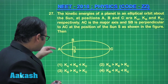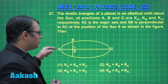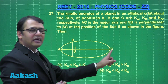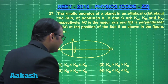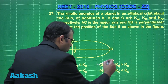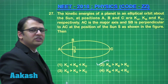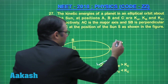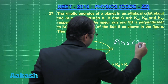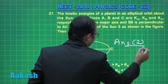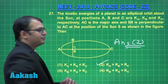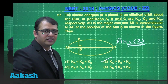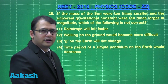So maximum kinetic energy will be at A, lowest will be at C, and B will be intermediate. Therefore, option 2 is the correct answer for this question.